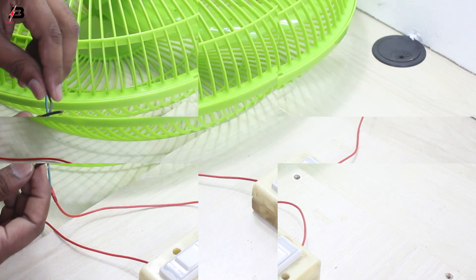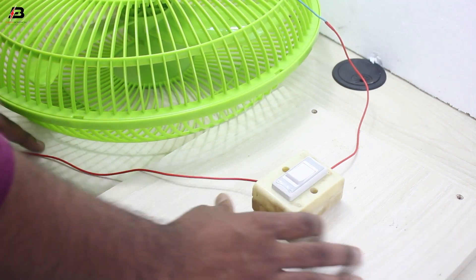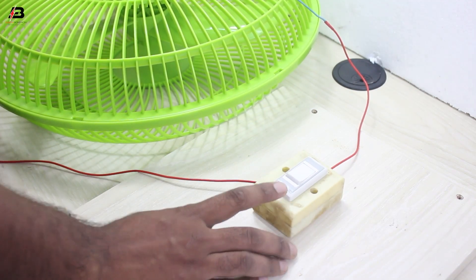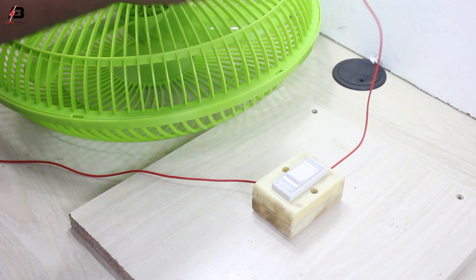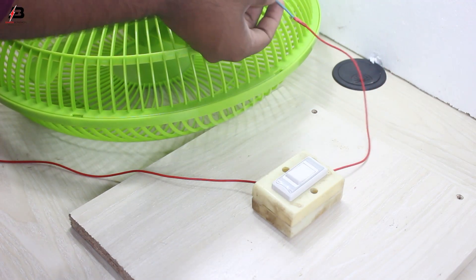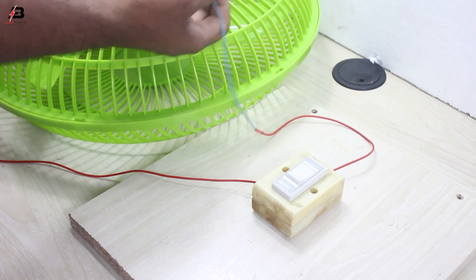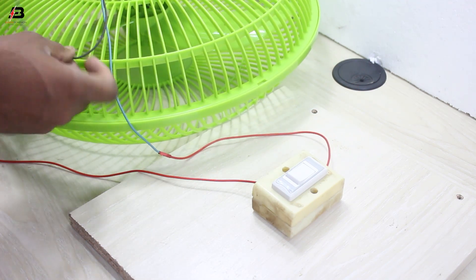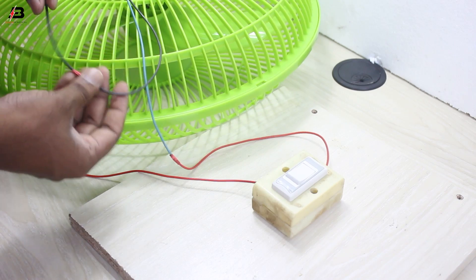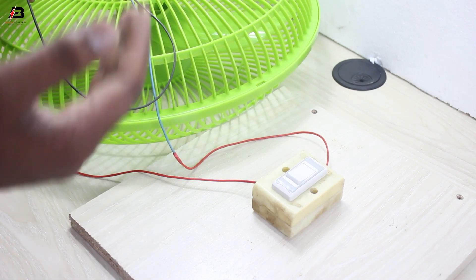Our connection is okay. That's our switch and that's the fan connection from the switch. Another connection—the black wire—is already connected to source. That's our black wire. Now we'll test the fan to see how it works.